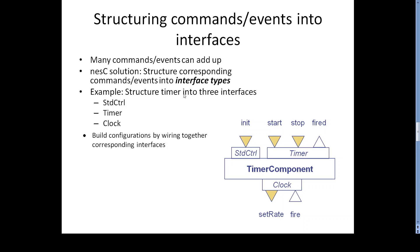For example, structuring a timer component into interfaces: we have three interfaces. One is the standard control interface, another is the timer interface, and another is the clock interface. The standard control interface includes initialization, start, and stop. The triggering event and fired are inputs. Set clock or set rate are outputs. We can build a configuration by wiring together corresponding interfaces, using many commands or many events.